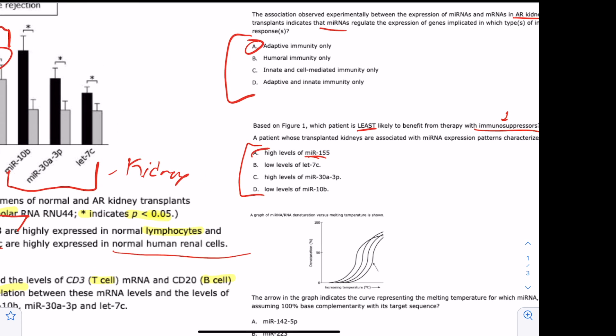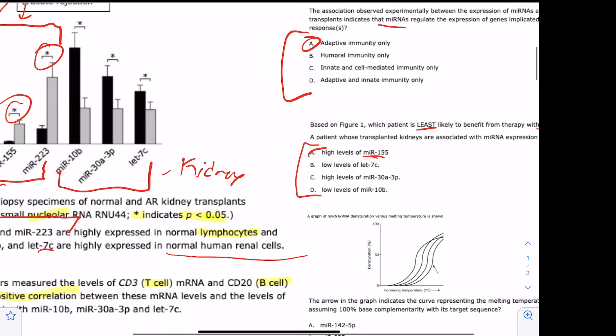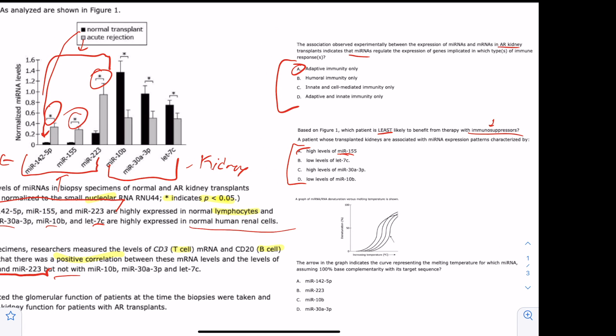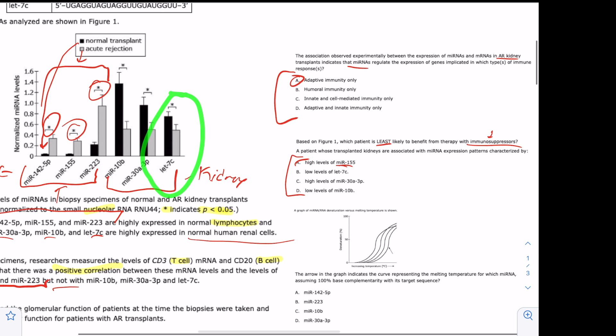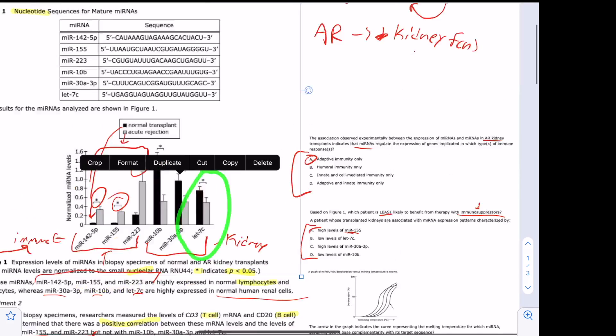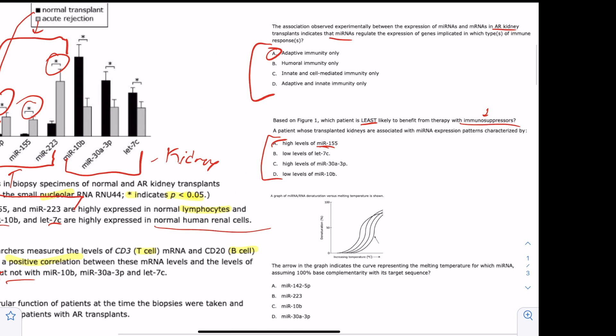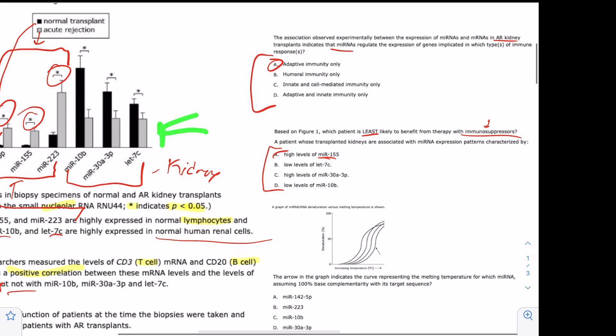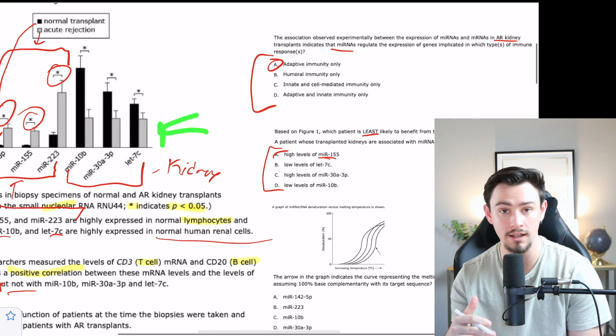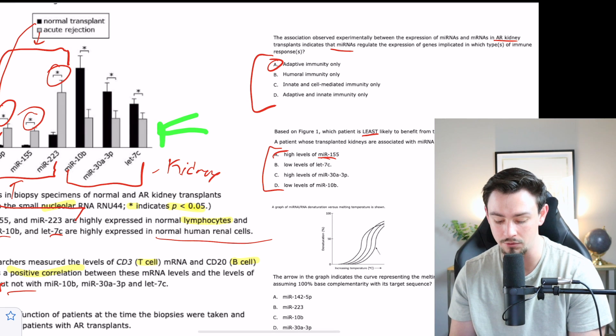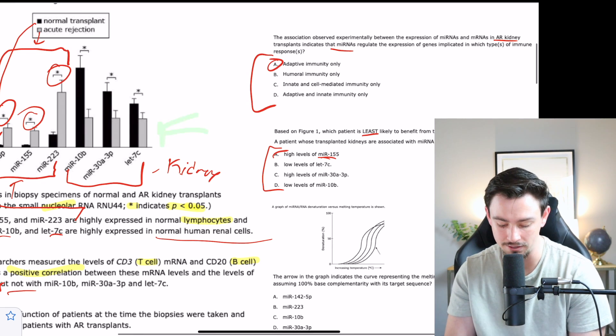B says low levels of LET7C. What does LET7C do? It looks like it's associated with a normal transplant. So do we want to decrease that with immunosuppressors? Or will we see a benefit from decreasing that with the immunosuppressors? No. If this is good, if this is associated with normal transplants, then having low levels of it would probably be a bad thing. So we don't want to counteract that with immunosuppressors. We'll say maybe not to B.